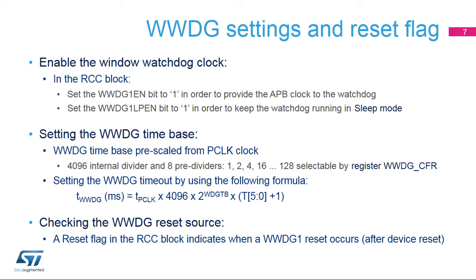The down-counter uses the APB clock PCLK divided by 4096, and again divided by a division ratio selected by the application. It can be 1, 2, 4, 8, 16, 32, 64, or 128, as defined in the WWDG CFR register.